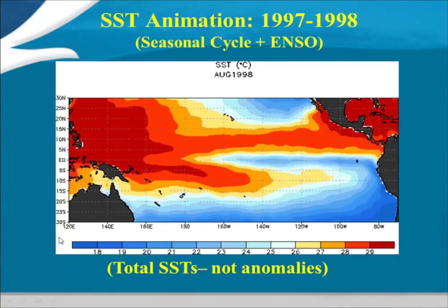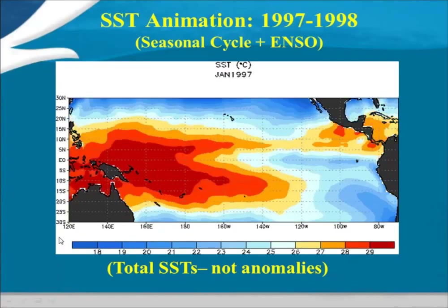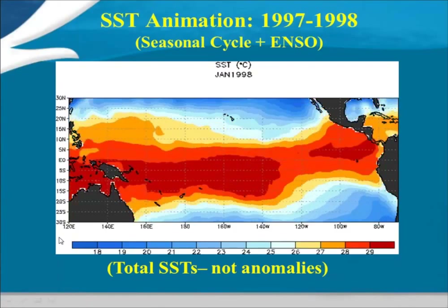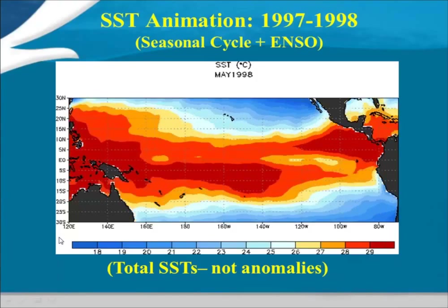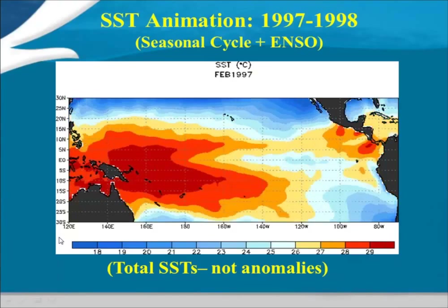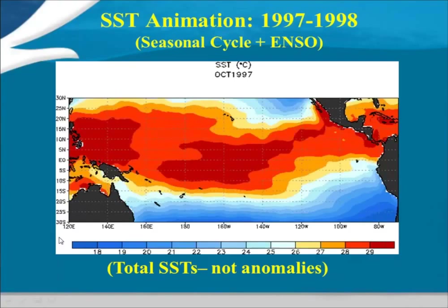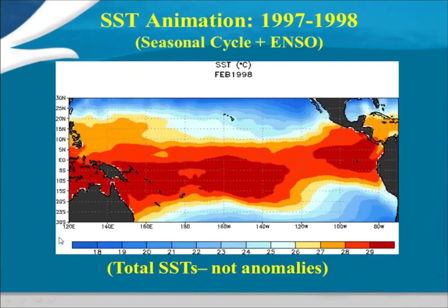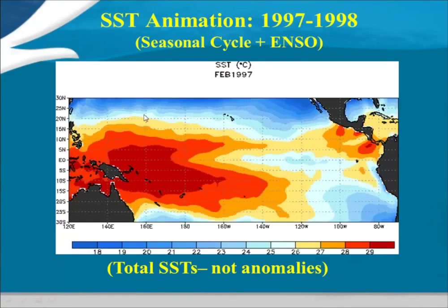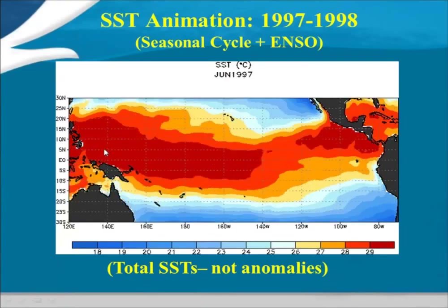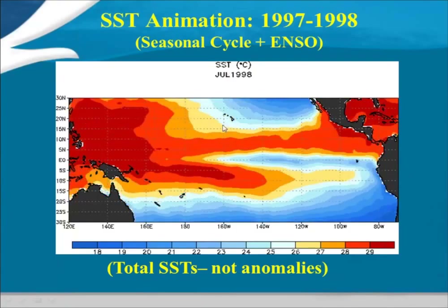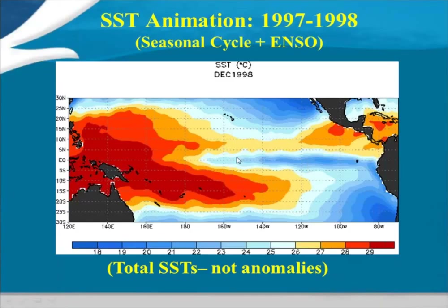On average, events last about 9 to 12 months. El Niños in particular don't last much beyond that. However, La Niñas can persist much longer, for multiple years. Both generally peak during the northern hemisphere winter.